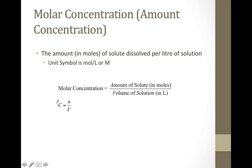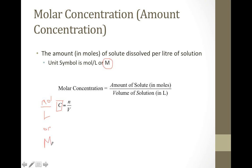Big distinction: the previous C's that we were dealing with were lowercase. For molar concentration, it will be a capital C. The units are going to be moles per liter. There's another notation that's used — capital M — so we can use moles per liter or capital M, which means molar concentration.